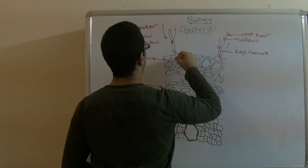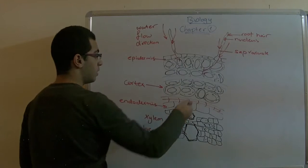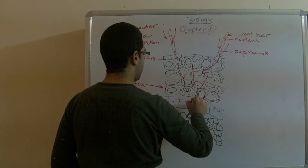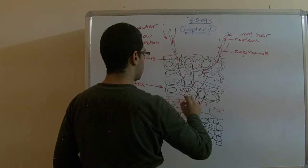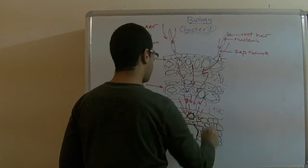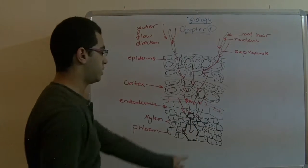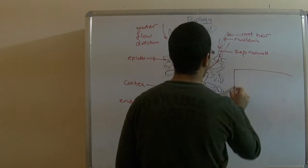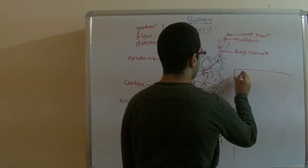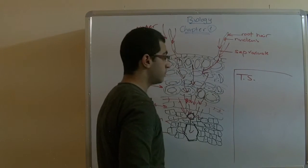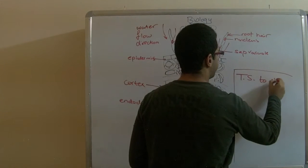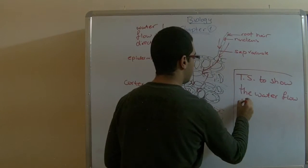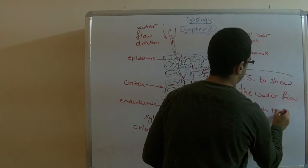We will let water enter from here and draw arrows along the stem showing how the water moves. We draw various lines to illustrate the area the water reaches. This is the passage of water through the root. We must write the name of the drawing — this is the TS to show the water flow through the root.